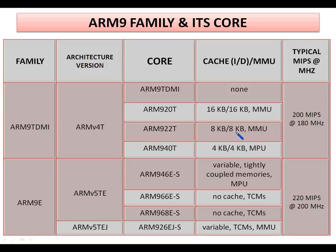The ARM9E family also supports 4 types of cores: ARM926EJS, ARM966ES, ARM968ES, and ARM946ES. The ARM926EJS is employed in the Atmel AT91SAM9263EJS microcontroller, which is available in our lab. ARM9E is normally operated in the frequency range of 200 MHz and achieves 200 MIPS.